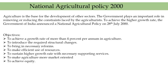What are the objectives of this National Agricultural Policy 2000? First, to achieve a growth rate of more than 4% per annum in agriculture. Second, to introduce the required structural changes. Third, to bring in necessary reforms in the agricultural sector. Next, to make efficient use of resources. Next, to sustain higher growth rate with necessary supporting services like technological, environmental, and economic. Next, to make agriculture more market oriented. And the last objective is to achieve equity — that is, all farmers should benefit from the positive changes in agriculture.